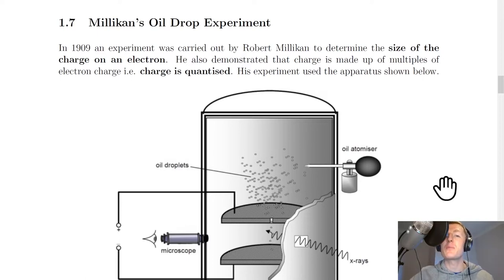I'm going to take you through the main points of this experiment and then we'll look at the conclusions. First of all, in 1909 an experiment was carried out by Robert Milliken to determine the size of the charge on an electron. He also demonstrated that charge is made up of multiples of electron charge, i.e. charges quantized.